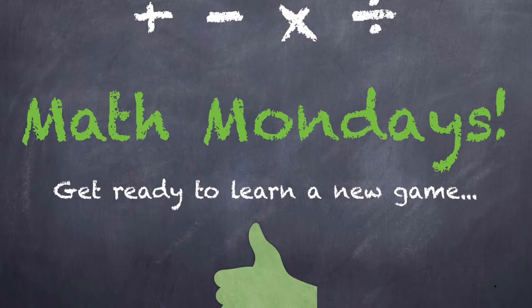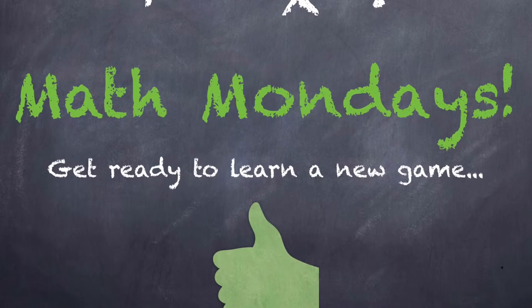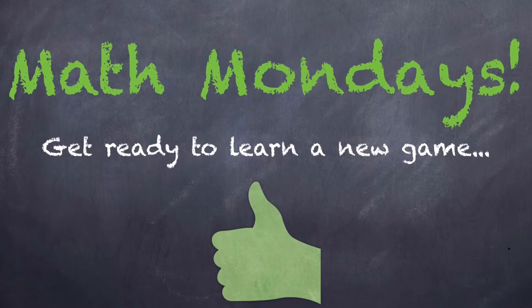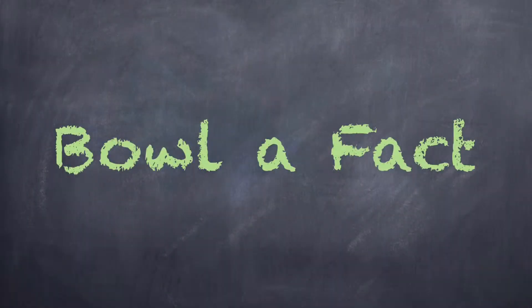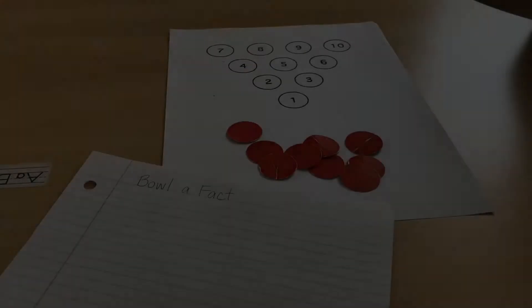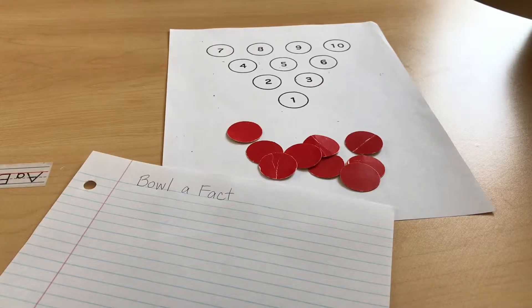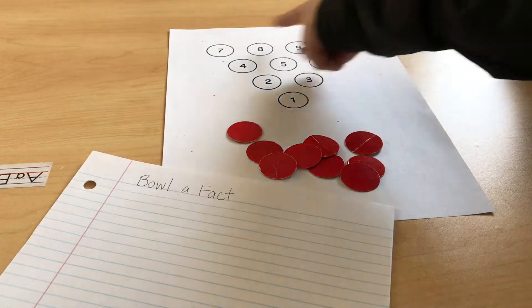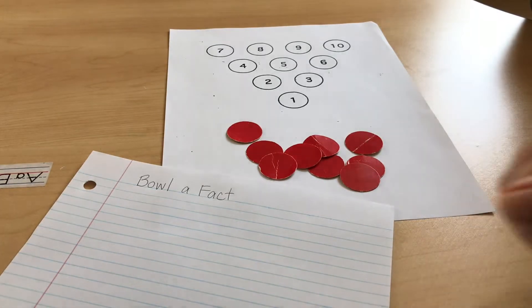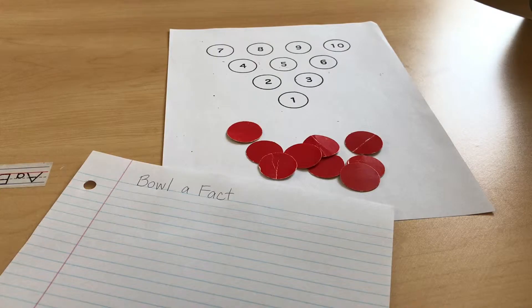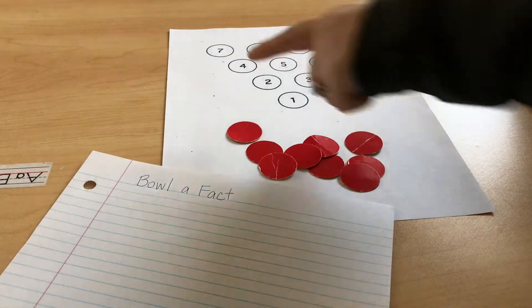The name of this game is Bowl a Fact. This is a one to two player game. What you need to play is a pyramid of numbers and three dice. This can be drawn out on paper at home or at school. The goal of the game is to cover up all of the numbers.